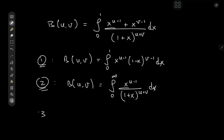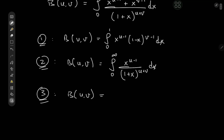And then there's the third really cool version: beta(u, v) equal to twice the integral from 0 to pi/2 of sine to the 2u minus 1 of x times cosine to the 2v minus 1 of x dx.